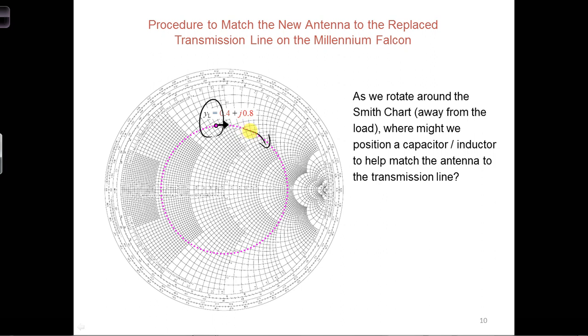Say first, let's consider a location at which the admittance dot crosses the horizontal axis, here and here. Could one of these two positions work?